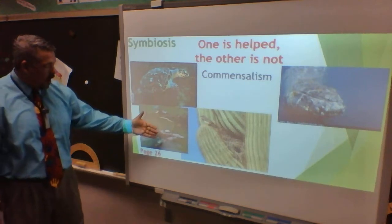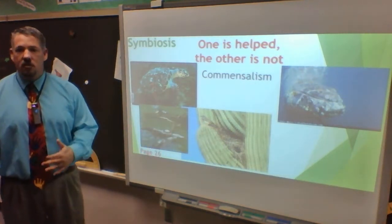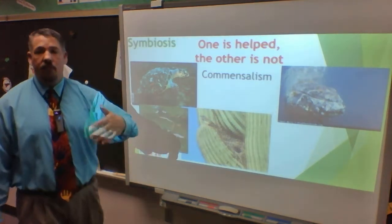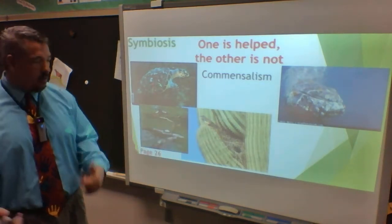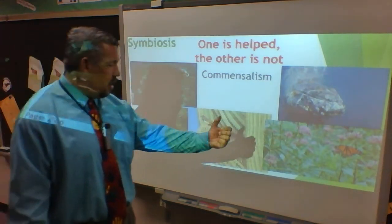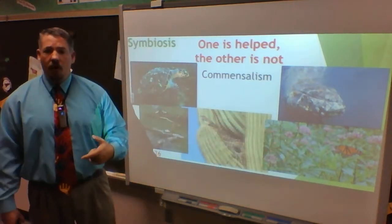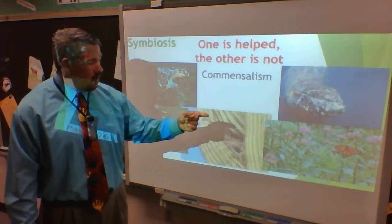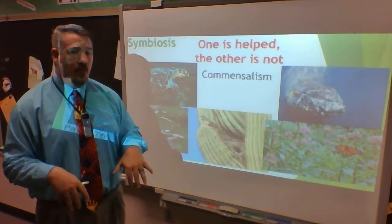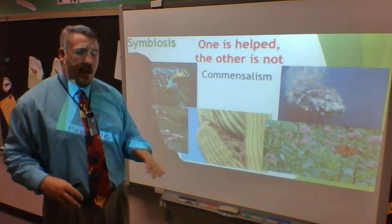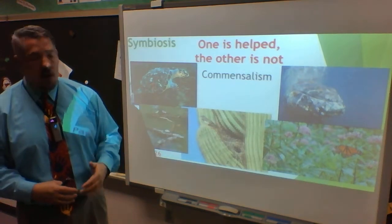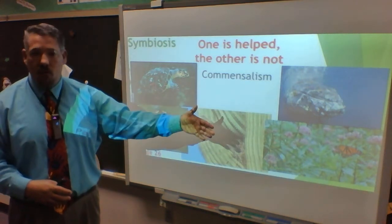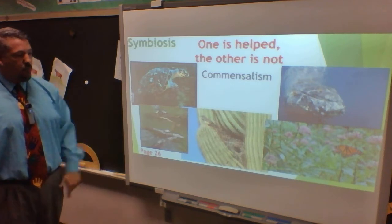Turtles will often ride on top of alligators — alligators generally won't eat turtles, so the turtle gets a free ride without having to swim, and the alligator doesn't care. The monarch butterfly and milkweed plant is another commensalism example. Milkweed gives off a sticky, nasty substance, but the butterfly digests it and stores it in its system. That milkweed substance makes the monarch toxic to most predators, so it has very few predators in both its caterpillar and butterfly forms — it gets protection from the plant.